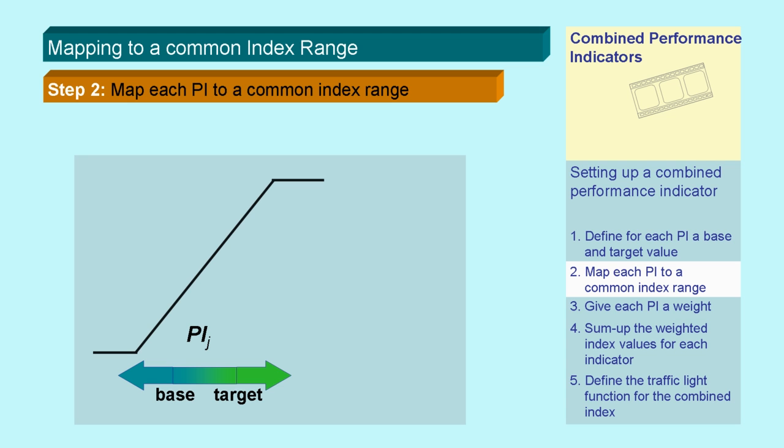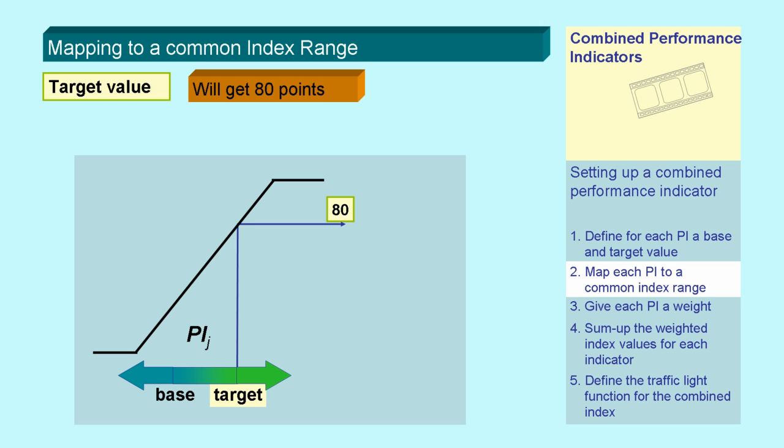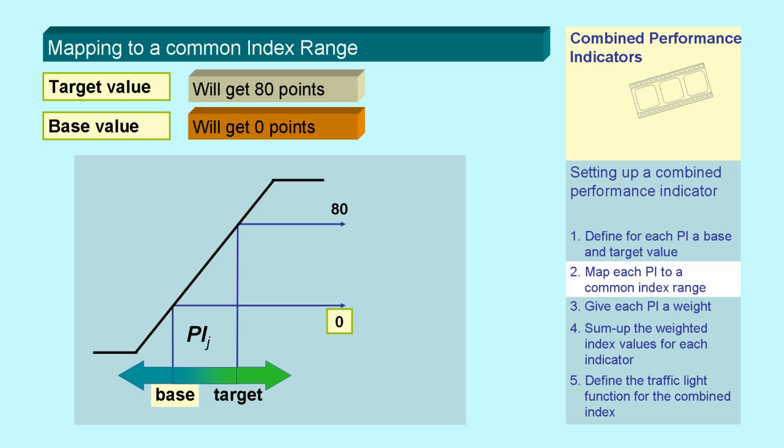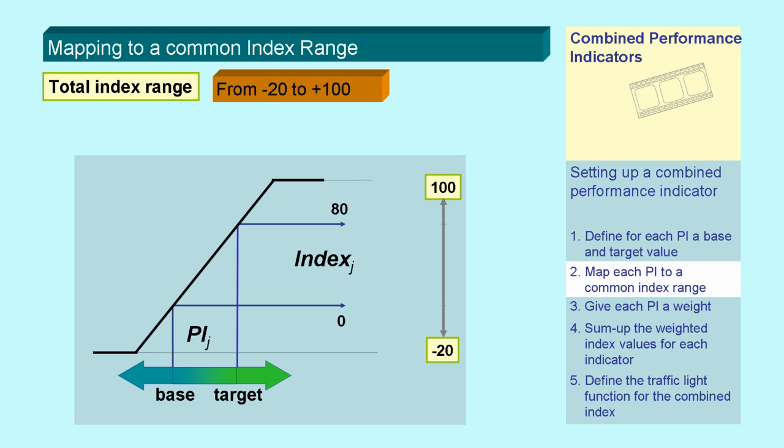For each performance indicator, the target value is mapped to an index value of 80. The base value is mapped to an index value of 0. The total index ranges from minus 20 to 100.